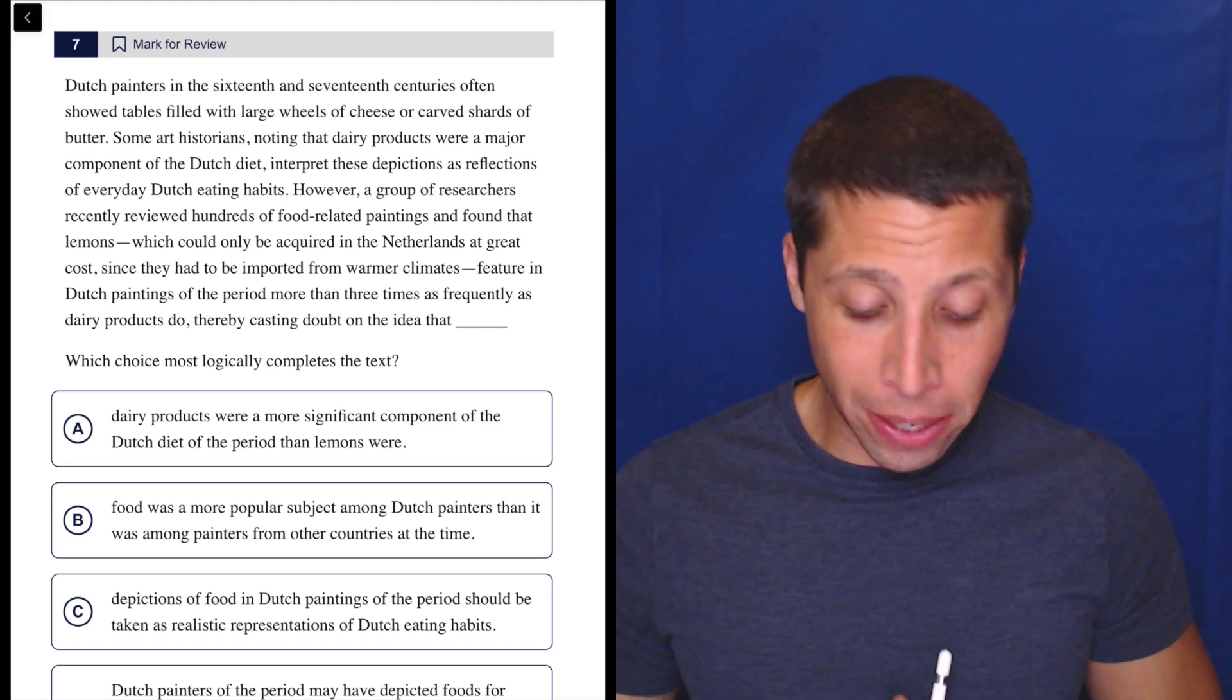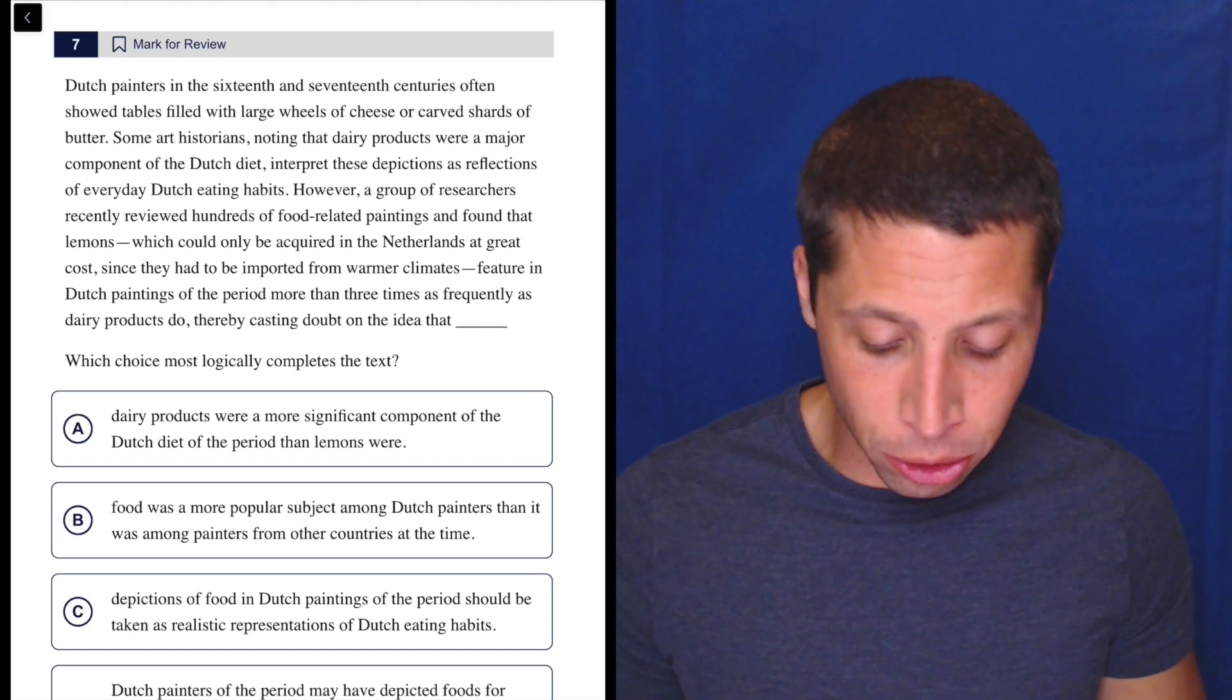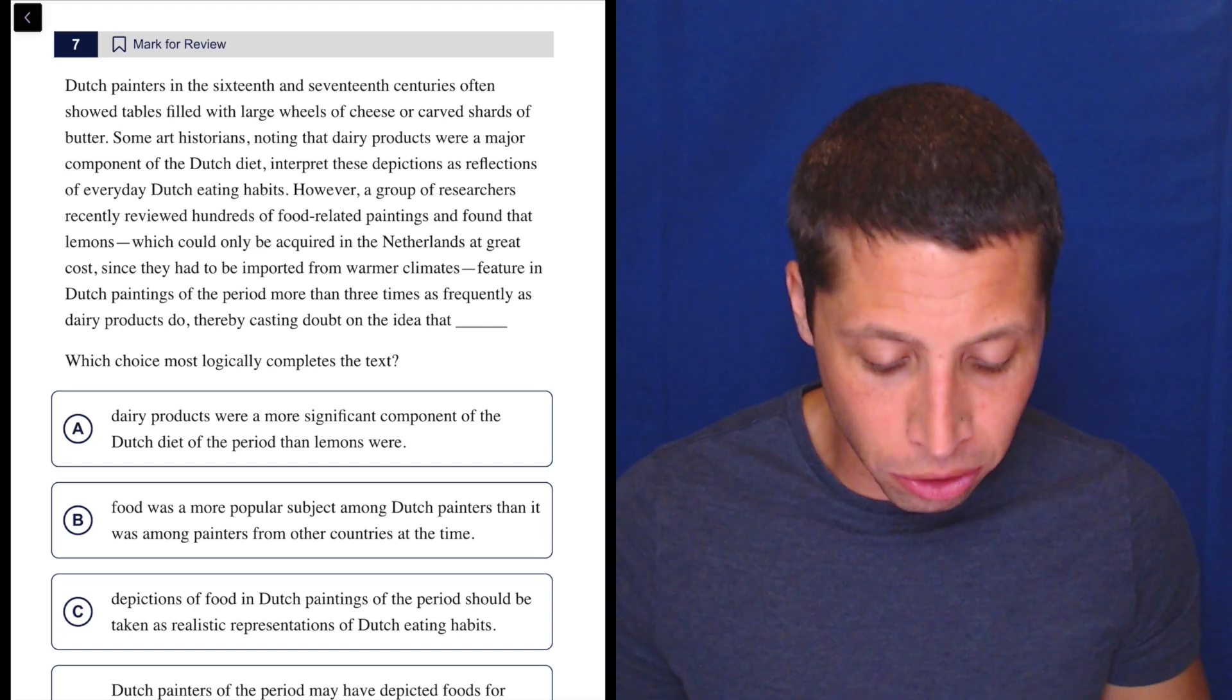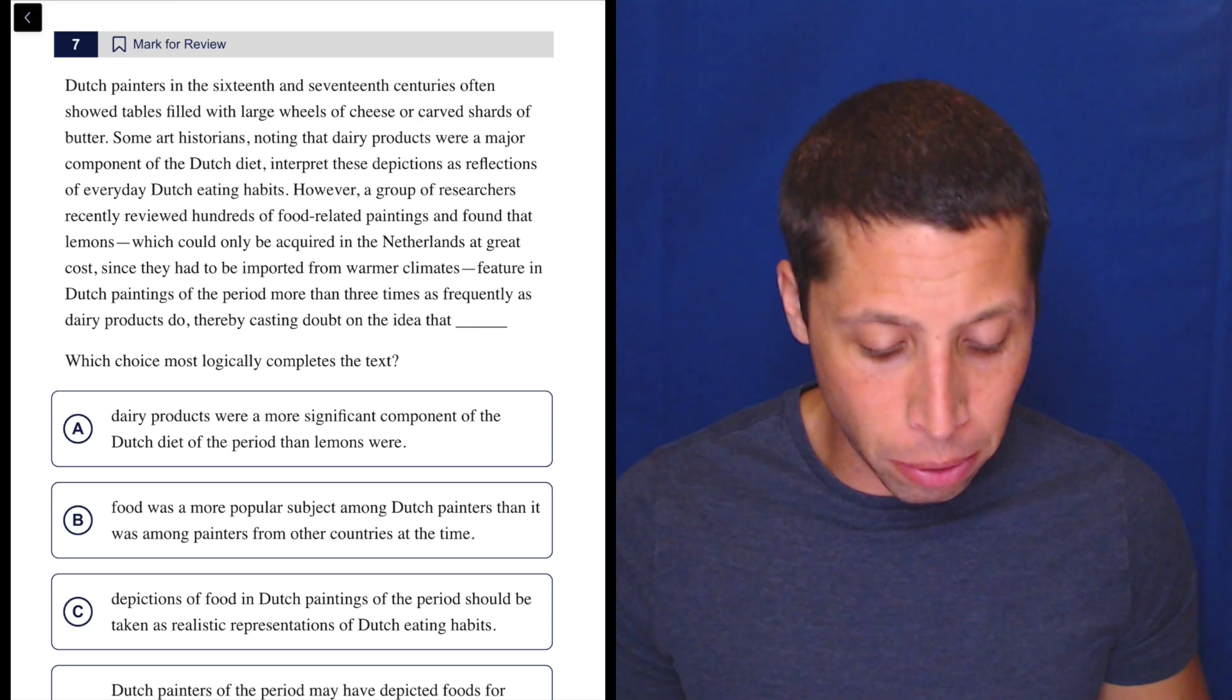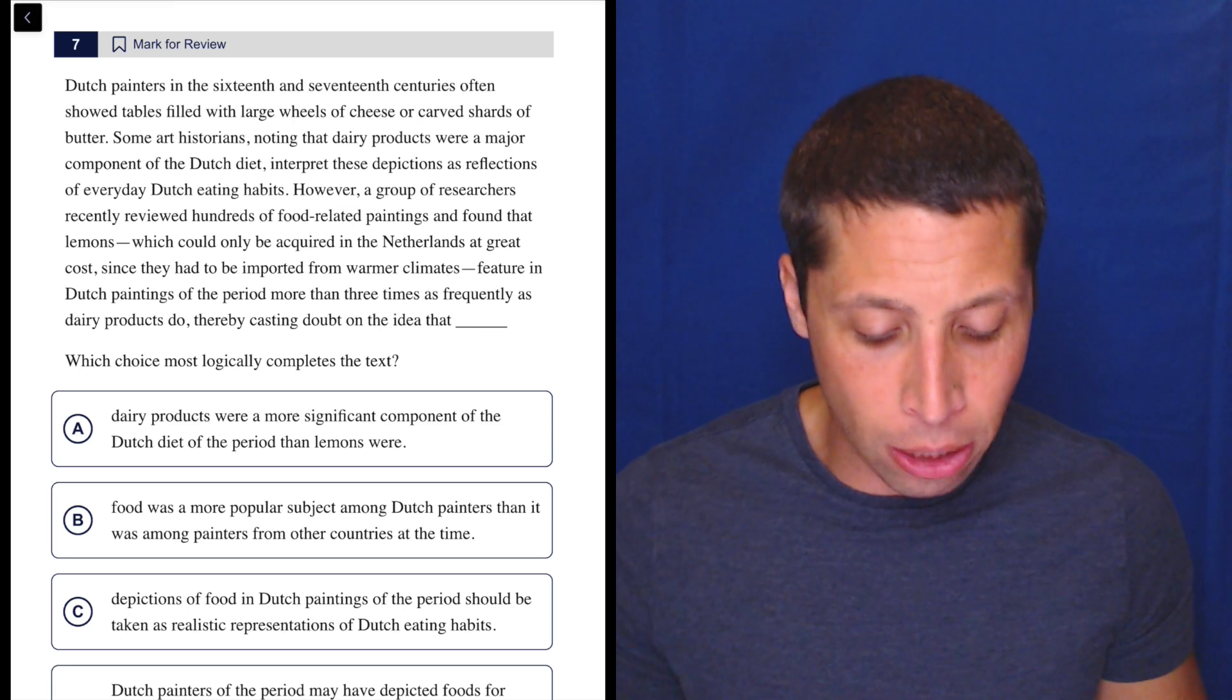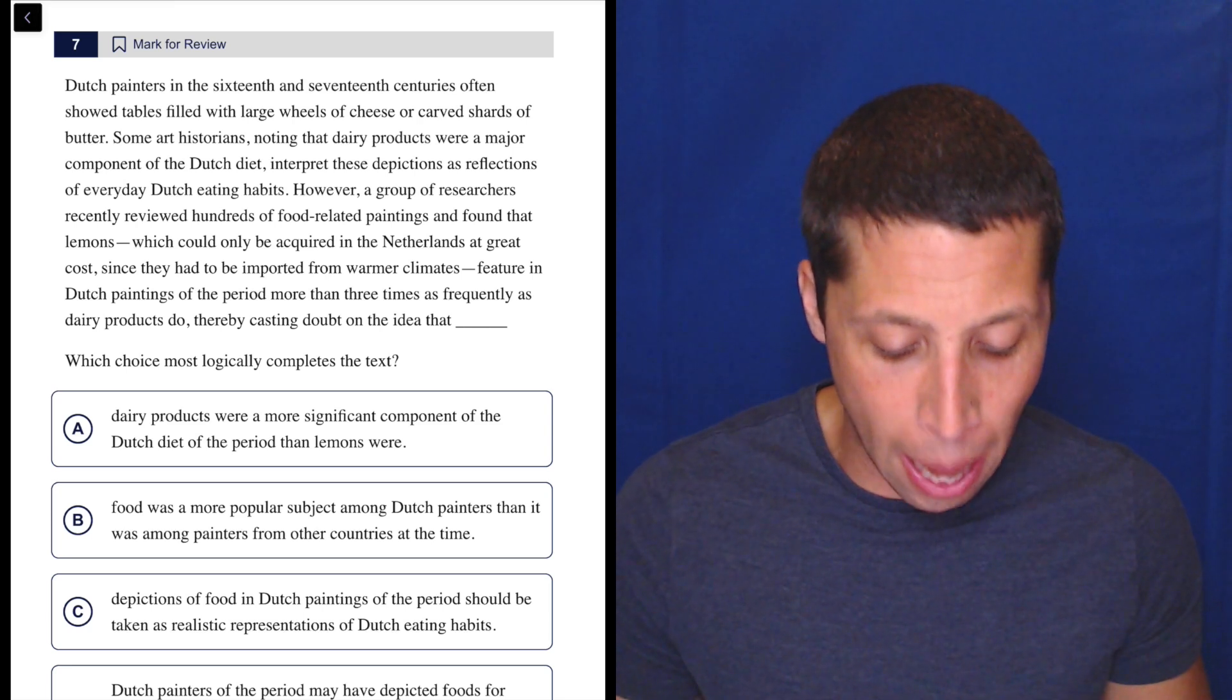All right, let's just get into it. Dutch painters in the 16th and 17th centuries often showed tables filled with large wheels of cheese or carved shards of butter. Some art historians noting that dairy products were a major component of the Dutch diet interpret these depictions as reflections of everyday Dutch eating habits.